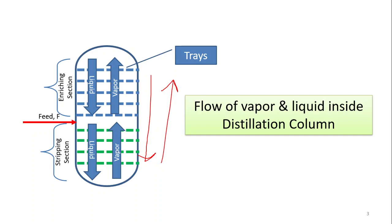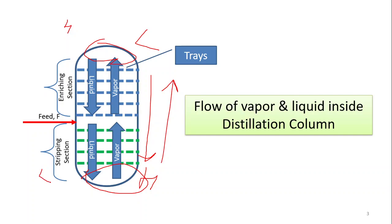Liquid flow is governed by gravitational force — everything under the influence of gravity moves downward. But vapors flow because of pressure difference. Vapor always flows from high pressure to lower pressure. High pressure exists at the bottom section of the column and low pressure at the top. That is why vapor moves from high pressure at the bottom to low pressure at the top. The vapor flow is based on the pressure drop or the pressure gradient.